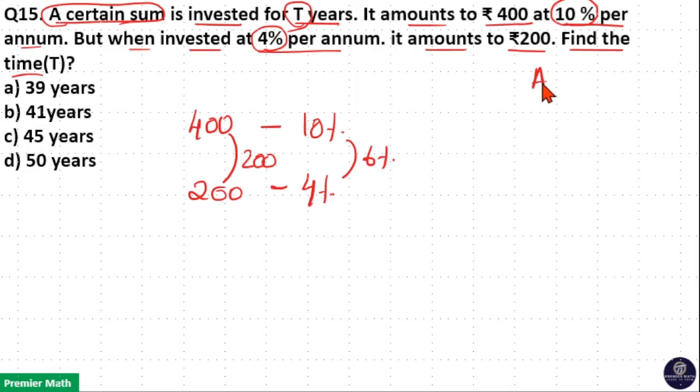Because we already know, amount is equal to principal plus interest. And if I am writing A1 as 400, then Rs. 400 is equal to principal plus interest received in T years. So I will write it as I1 with the 10% rate.